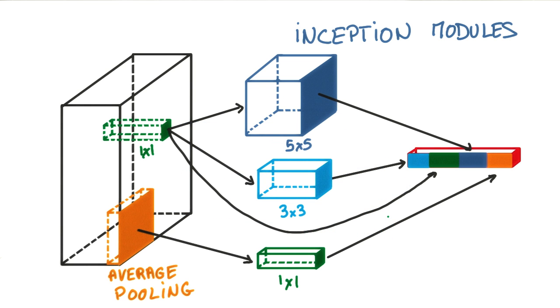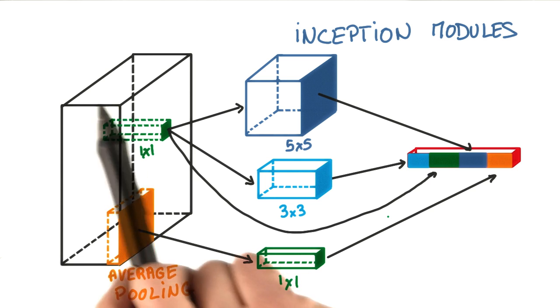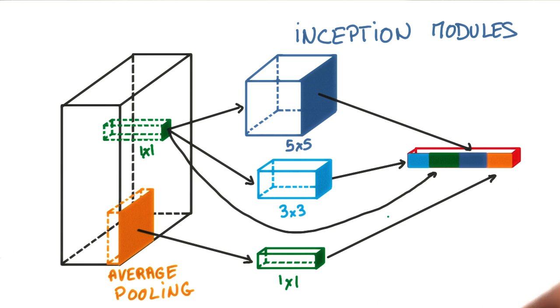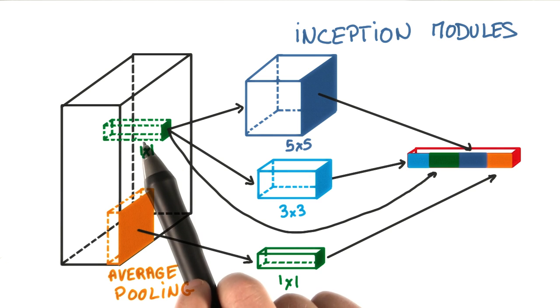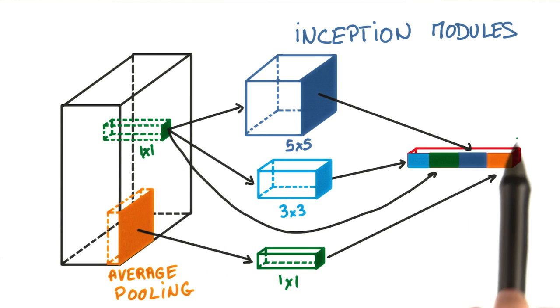Here's what an inception module looks like. Instead of having a single convolution, you have a composition of average pooling followed by a one by one, then a one by one convolution, then a one by one followed by a three by three, then a one by one followed by a five by five. And at the top, you simply concatenate the output of each of them.